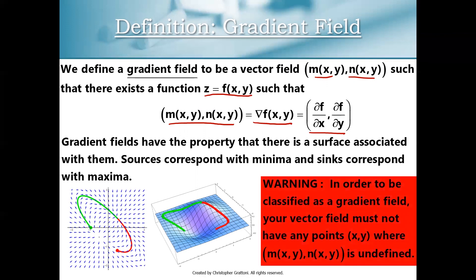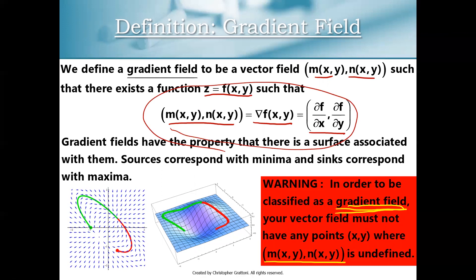We have to be careful about something: gradient fields have all sorts of interesting properties, but if we want our gradient field to enjoy those properties, we need to make sure that m comma n is always defined. Otherwise, you technically still have a gradient field as long as you meet the original definition, but all of the properties of a gradient field end up getting lost. We'll talk more about singularities as we continue through this course — next chapter you'll hear more about singularities, and the chapter after that we do a deep dive into how singularities interact with vector fields. For now, know that if you really want to get the most out of a gradient field, your m comma n should not have any singularities.